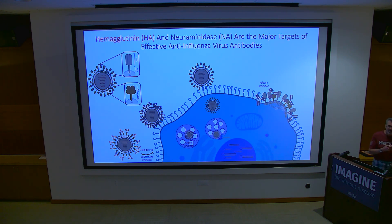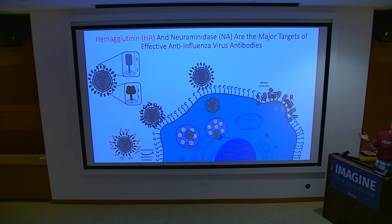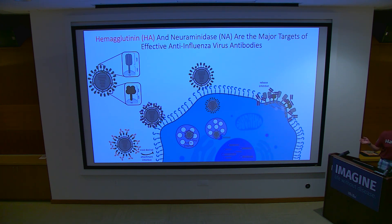Why don't companies measure how much neuraminidase is in the vaccine? Because they're lazy. The neuraminidase assay is something an eighth-grader can do — you take substrate from one vial, put it in another, it turns color, and you measure it in a spectrophotometer. All they would have to do is take batches of vaccine and measure neuraminidase activity. We could know which vaccines are better because of neuraminidase content.